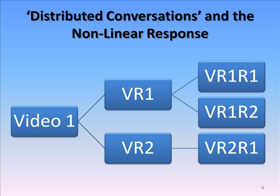Thus, the first video can set up a tree-like structure of responses, which is vastly different from the conversation we first considered, as we can review all of the branches of those online conversations. This non-linear dialogue occurs offline as well; it's just the process is much easier to trace online. For instance, video, text, or audio trails are left behind and can be easily identified.